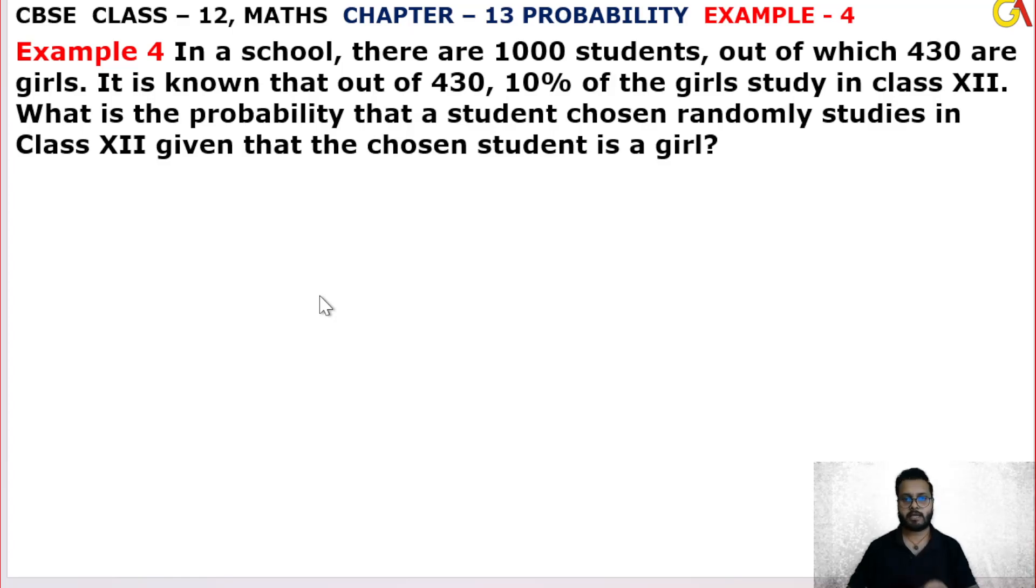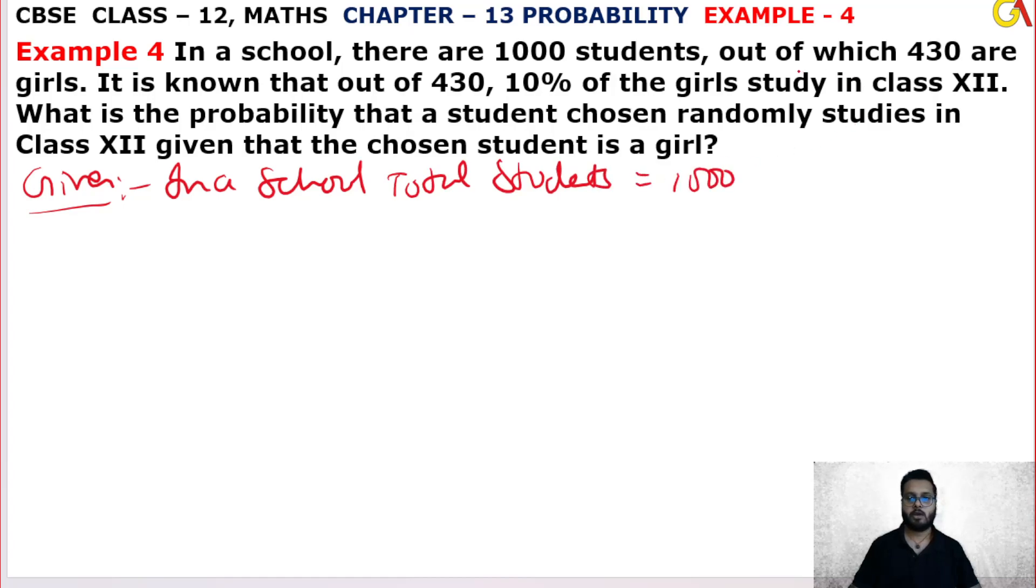Students, next time we see Example Number 4. In a school, there are 1000 students total. Out of which 430 are girls.